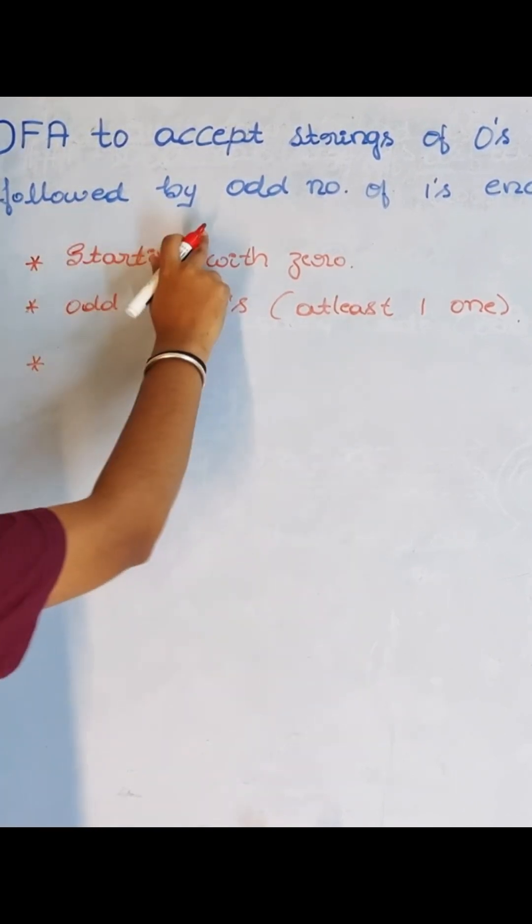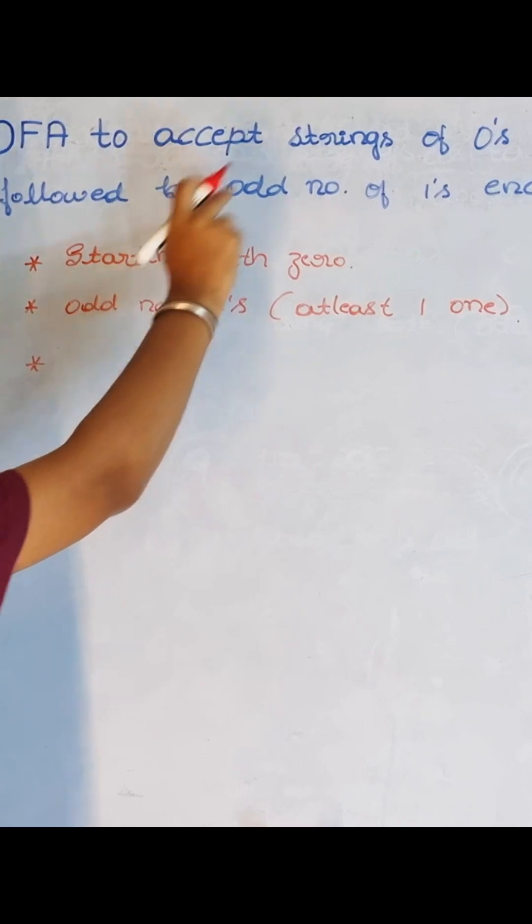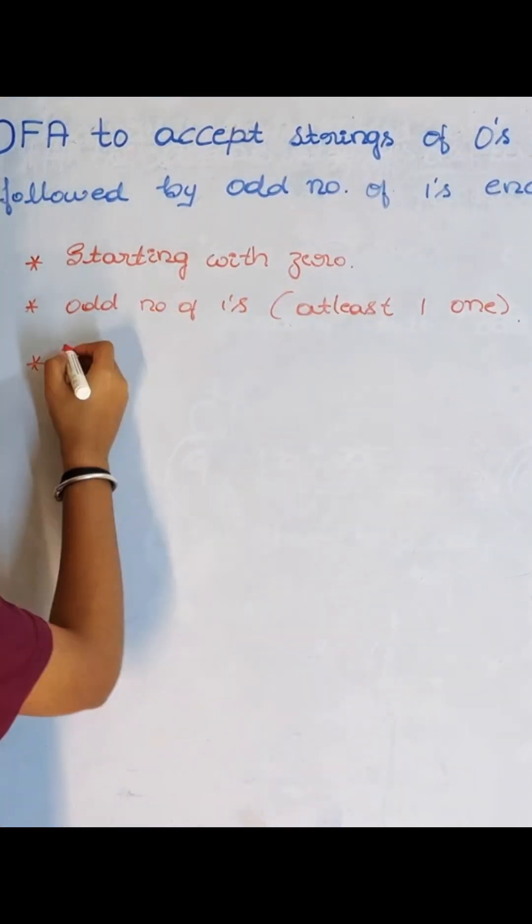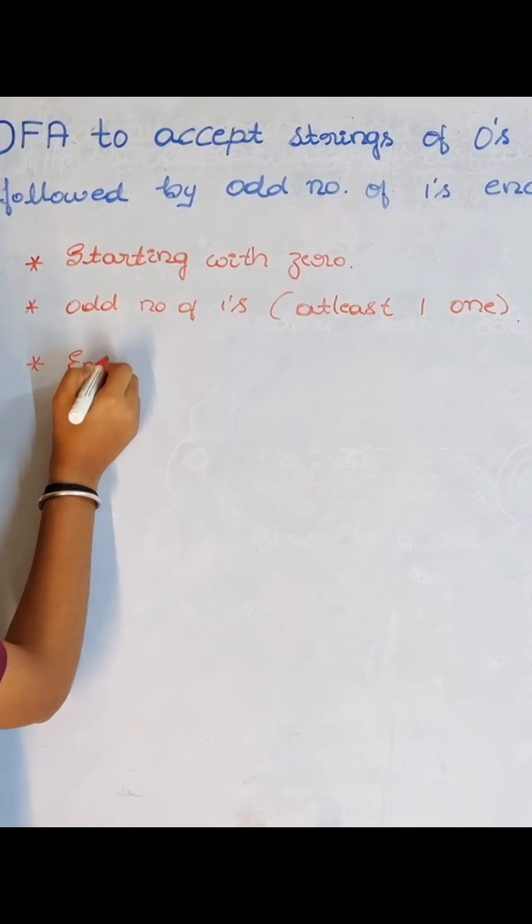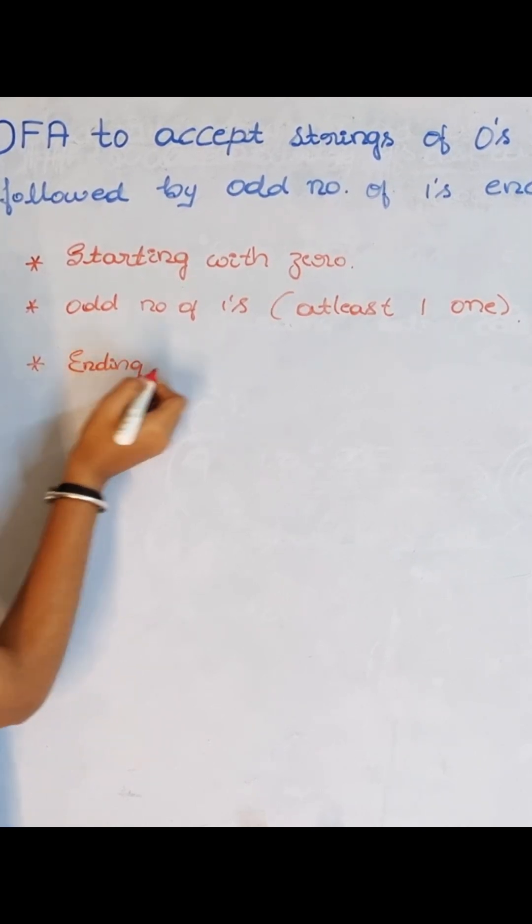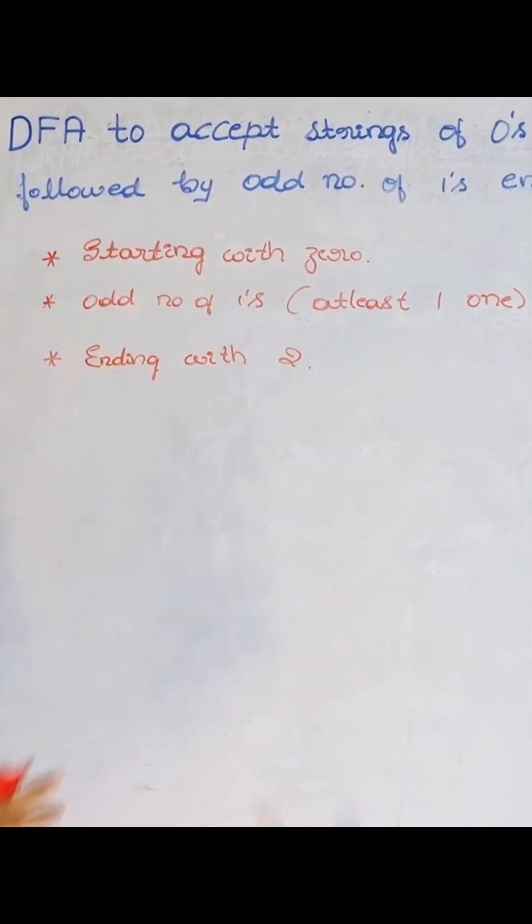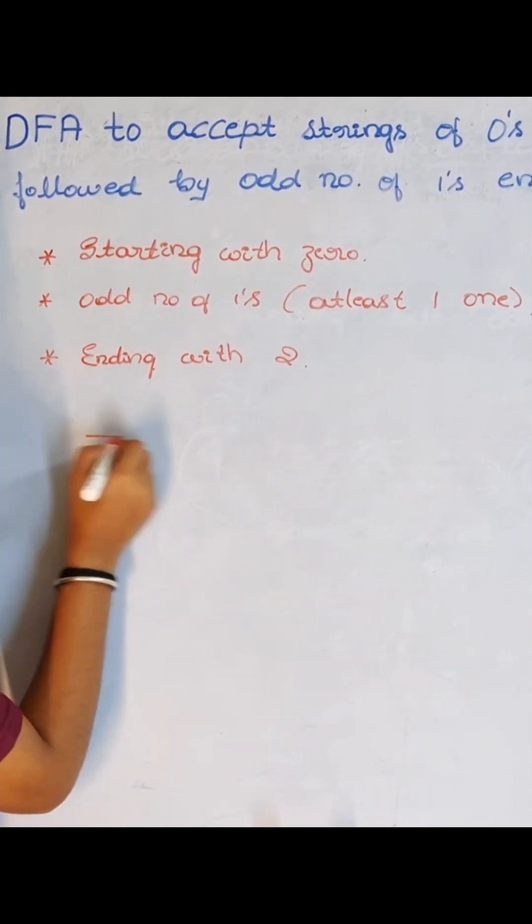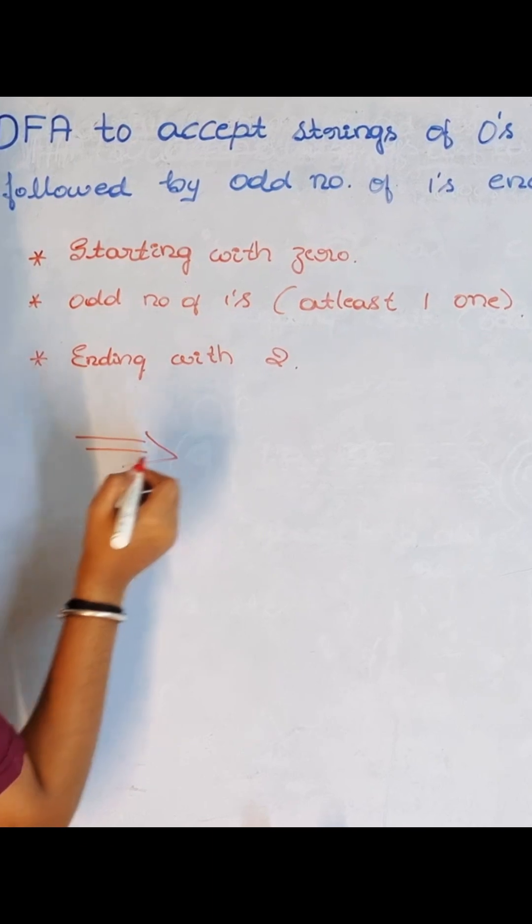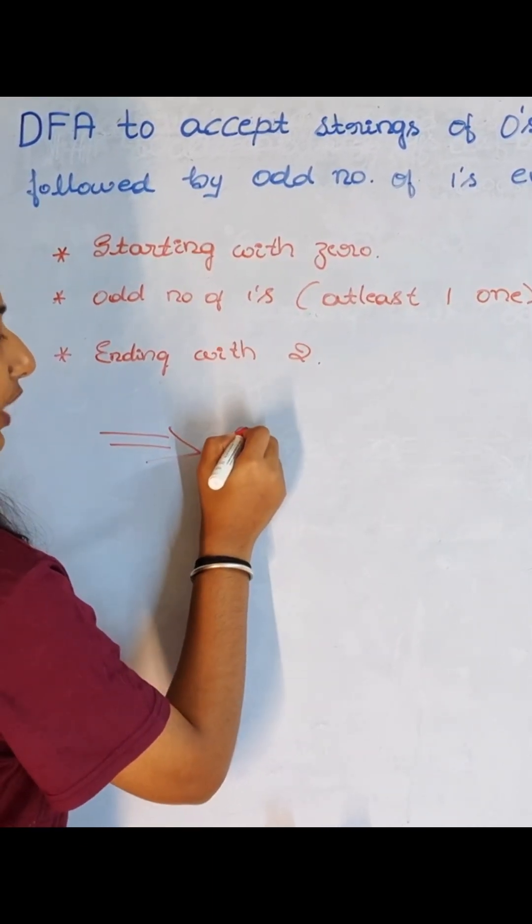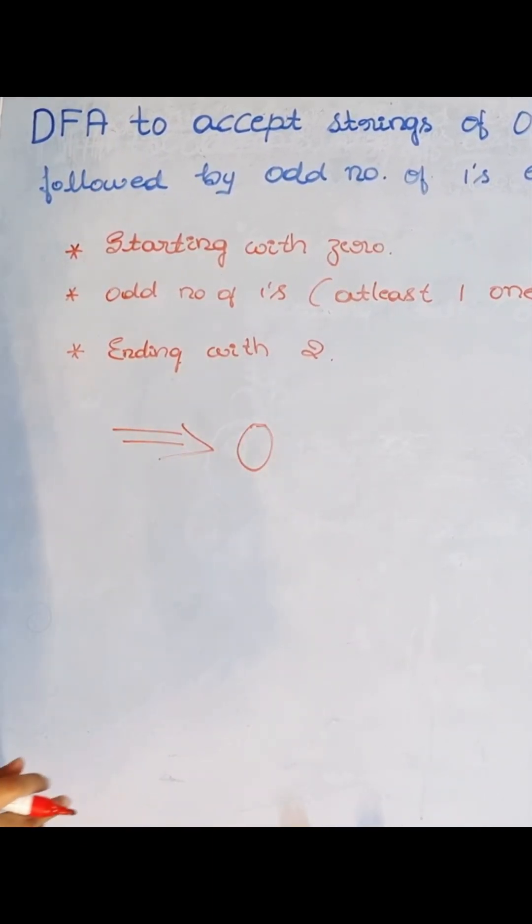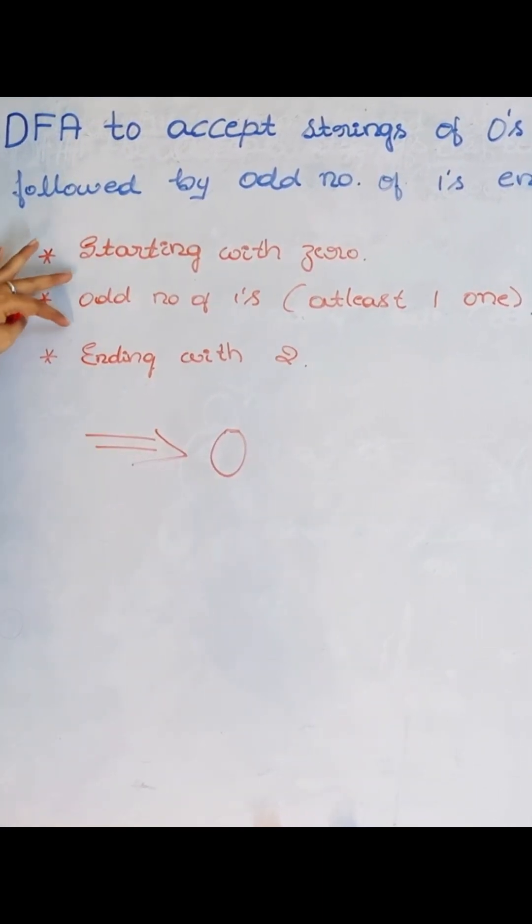Look here, 'followed by' is applied for odd number of ones and ending with two also. It should end with two. So to be clear, let's represent this. It should start with zero, and 'followed by' means next to this we should have an odd number of ones.